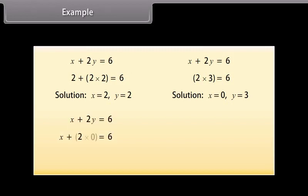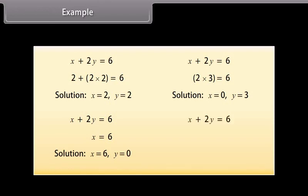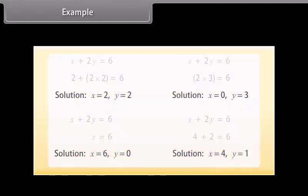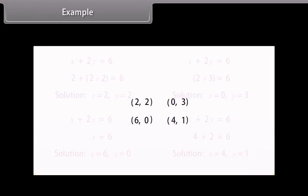Taking Y as 0, the equation reduces to X equals 6, so (6, 0) is also a solution. For the fourth solution, let Y equal 1: the equation reduces to X plus 2 equals 6, so X equals 4, and (4, 1) is also a solution. The four solutions of X plus 2Y equals 6 are: (2, 2), (0, 3), (6, 0), and (4, 1).